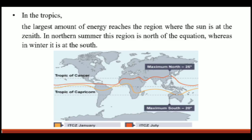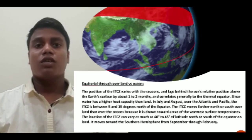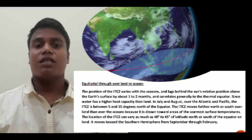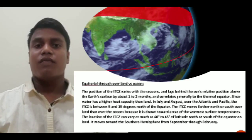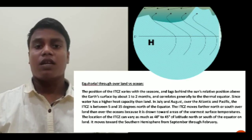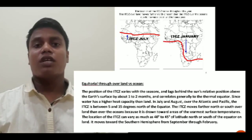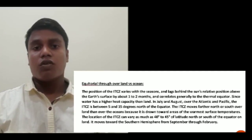In the Northern Summer, this region is north of the equator, whereas in Winter it is south of the equator. The position of the ITCZ can vary with the seasons and lags behind the Sun by about one to two months, correlating with the thermal equator. Since water has a higher heat capacity than land, in July and August above the Atlantic and Pacific, the ITCZ is between 5 and 15 degrees north of the equator. The ITCZ can move further north over land than over oceans because it is drawn toward areas of highest surface temperature.